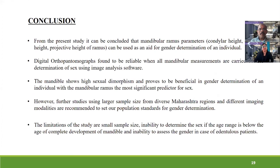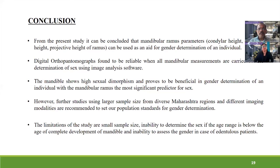In conclusion, mandibular ramus parameters — specifically condylar height, coronoid height, and projective height of ramus — can be used as an aid for gender determination of an individual. Digital OPGs were found to be reliable when all mandibular measurements are carried out for sex determination using image analysis software such as Adobe Photoshop 7.0. The mandible shows high sexual dimorphism and proves beneficial in gender determination, with the mandibular ramus being the most significant predictor.